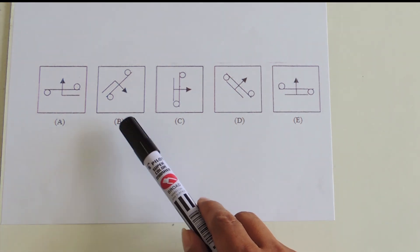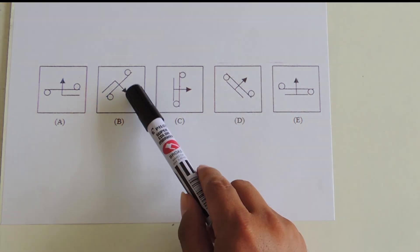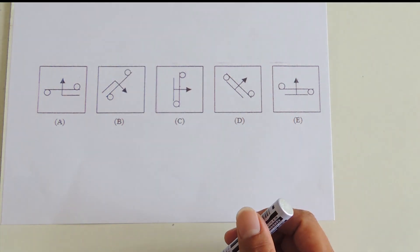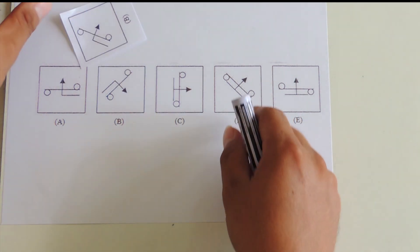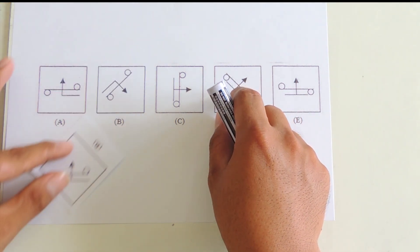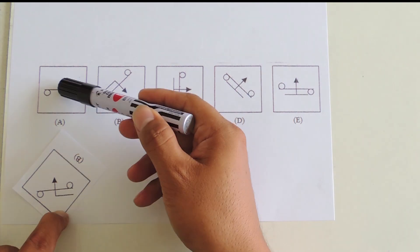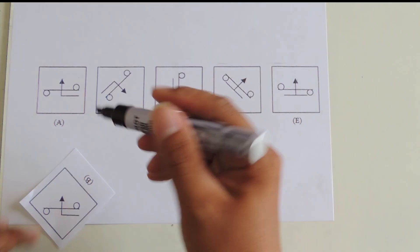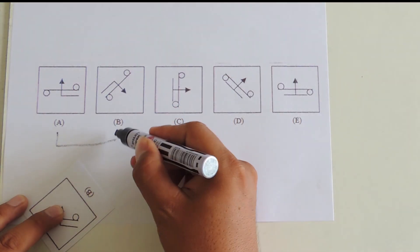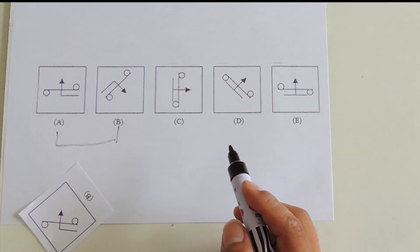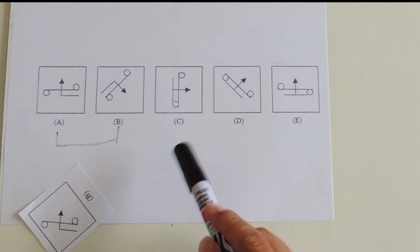If we focus on option B and rotate its arrow to point upward, it will actually look similar to option A. Therefore, A and B are equal.